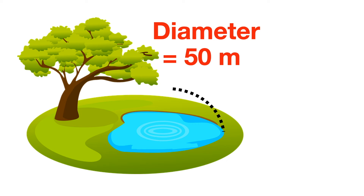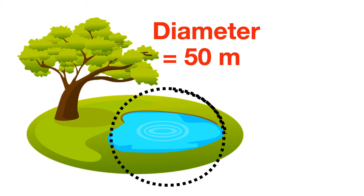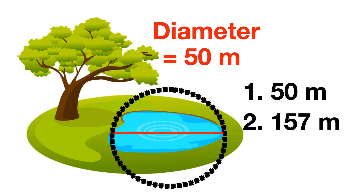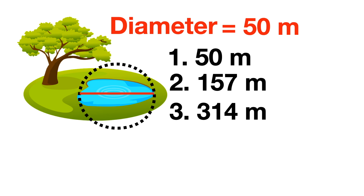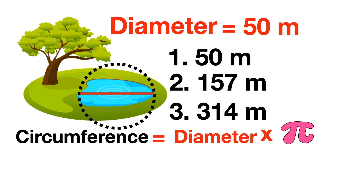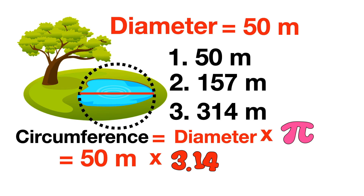Let's practice. You walked around a circle one time, which has a diameter of 50 meters. How far have you walked? Circumference equals diameter times Pi. Diameter is 50 meters and Pi is 3.14. The result is 50 times 3.14, which equals 157 meters.